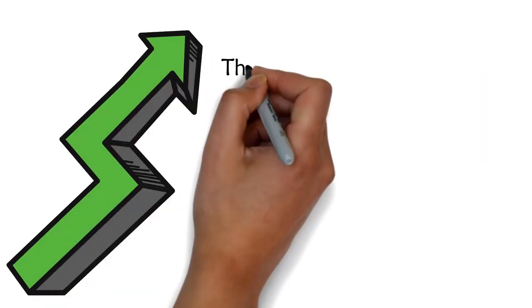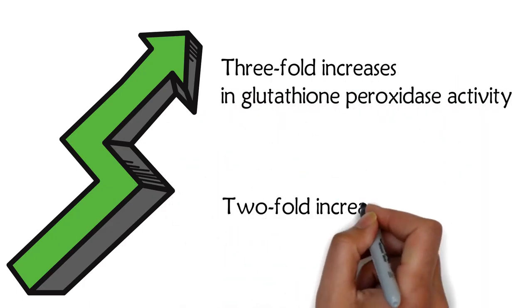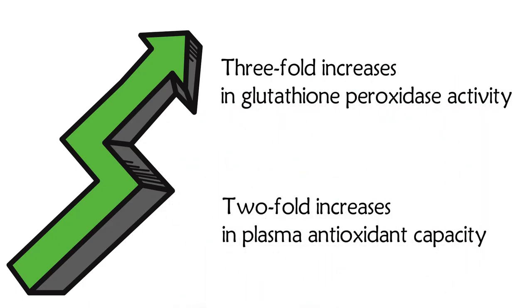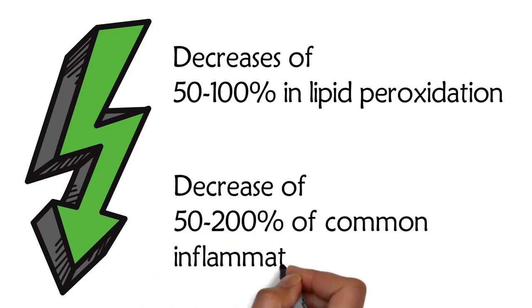This combination produces three-fold increases in glutathione peroxidase activity, two-fold increases in plasma antioxidant capacity, decreases of 50 to 100 percent in lipid peroxidation, as well as a decrease of 50 to 200 percent of common inflammatory biomarkers.